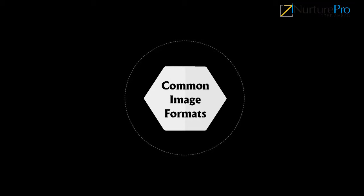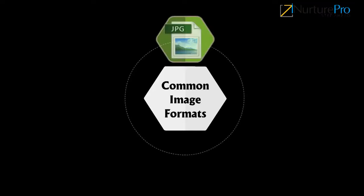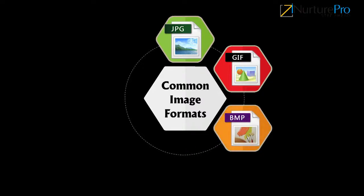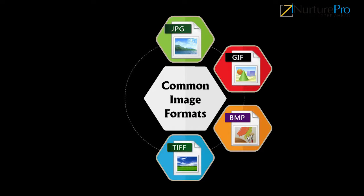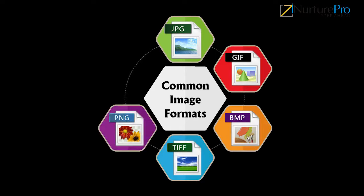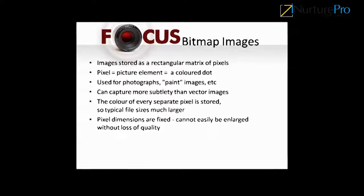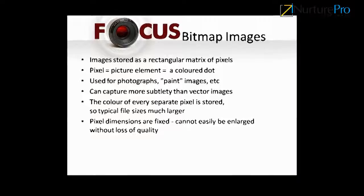Let us discuss some common image formats used in photography. JPEG is used for most digital photos but is lossy. GIF is best for line drawings with 256 colors maximum and no loss. BMP (bitmap) stores every pixel individually. TIFF is a standard in many technical applications with no loss. PNG is a lossless image format. RAW is data as captured directly by digital cameras.